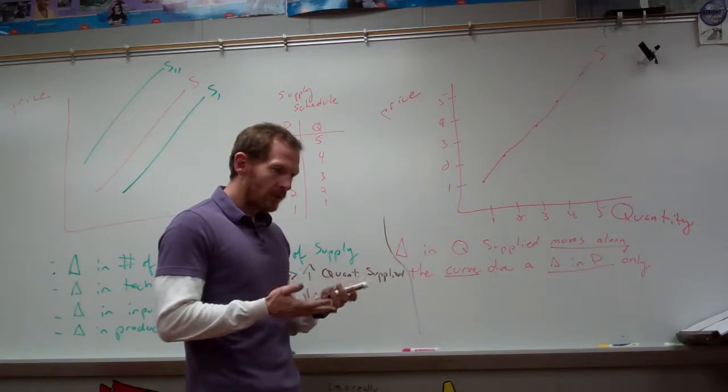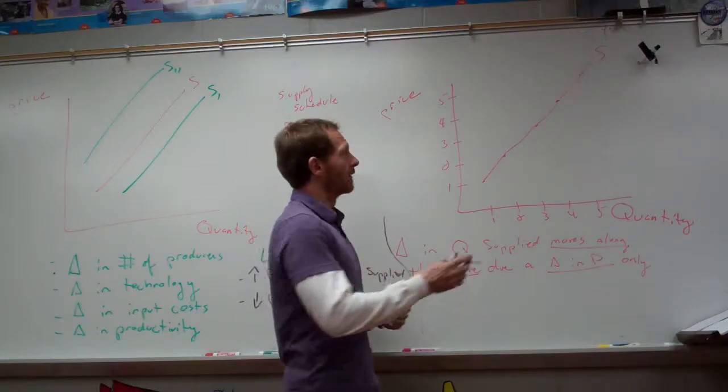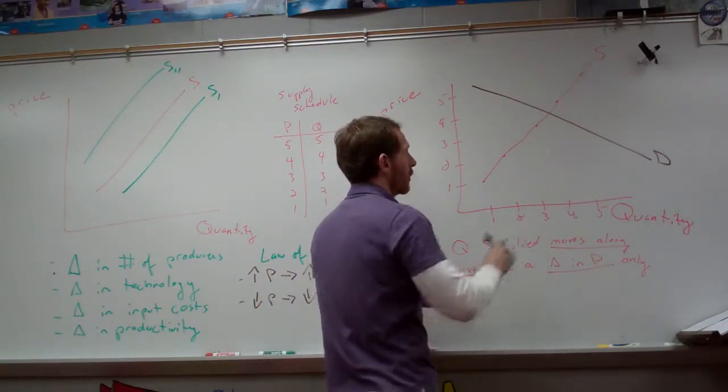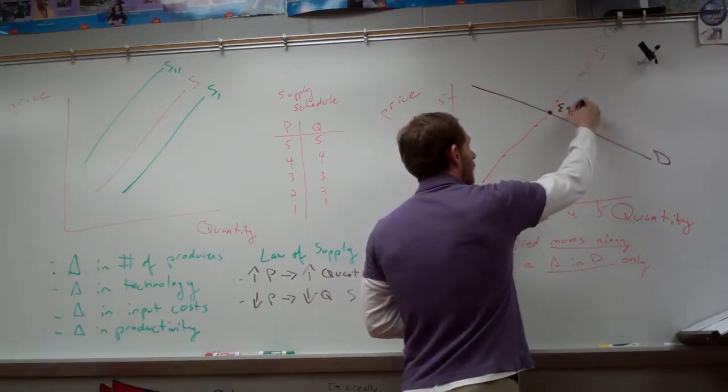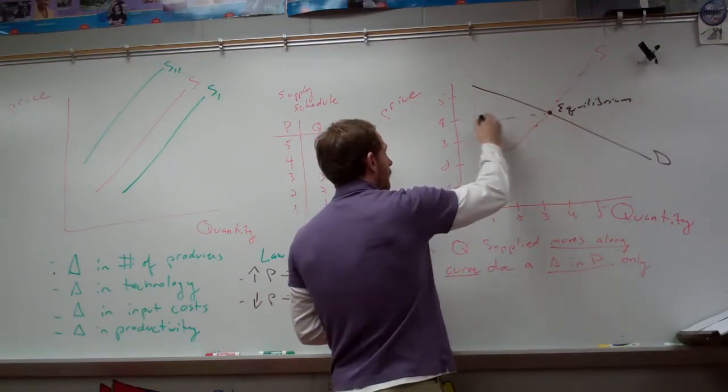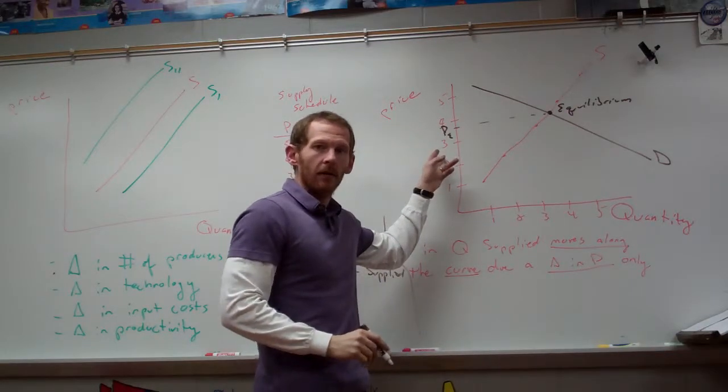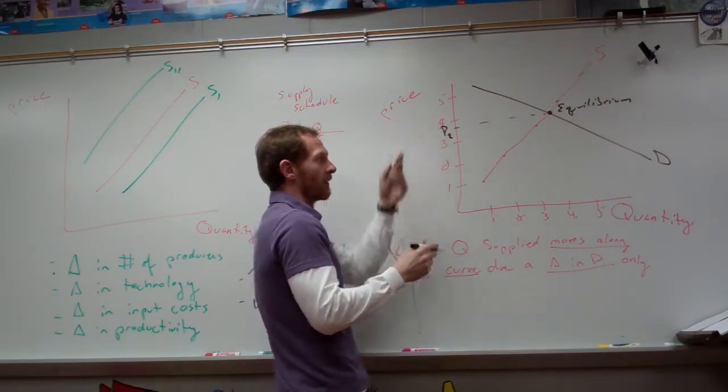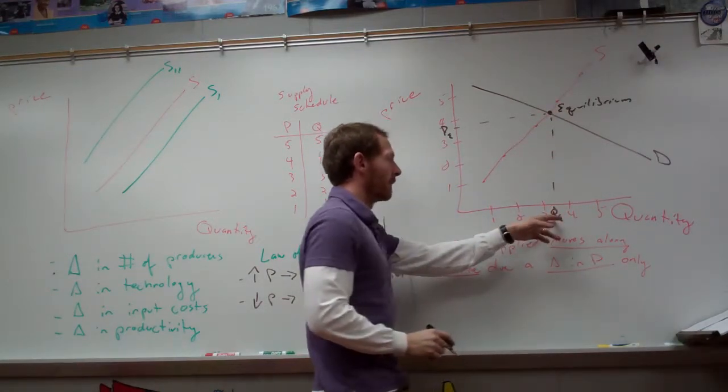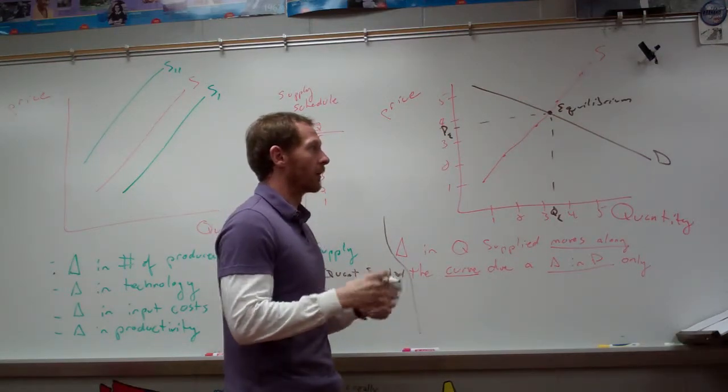So this is what a supply curve would look like. And obviously a demand curve is going to be going in this direction. So wherever they meet is called the equilibrium. And then the equilibrium price, you bring that out, you could say P sub E for P equilibrium, which would be like $3.75. And the quantity sub E, or equilibrium, would be 3.5 units of whatever you're selling or whatever the product is.